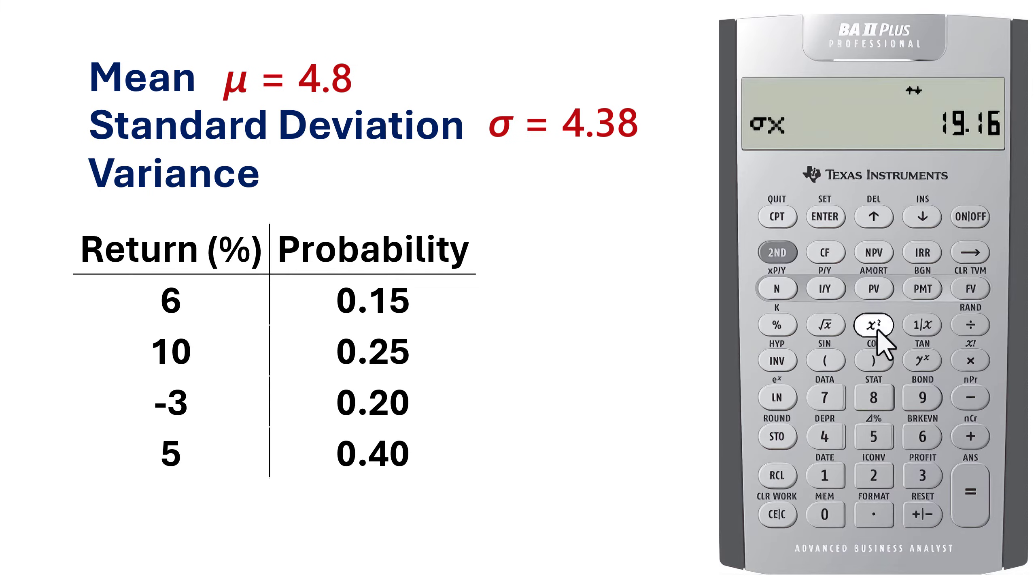To compute the variance, simply click the squared button here. And the population variance is 19.16.